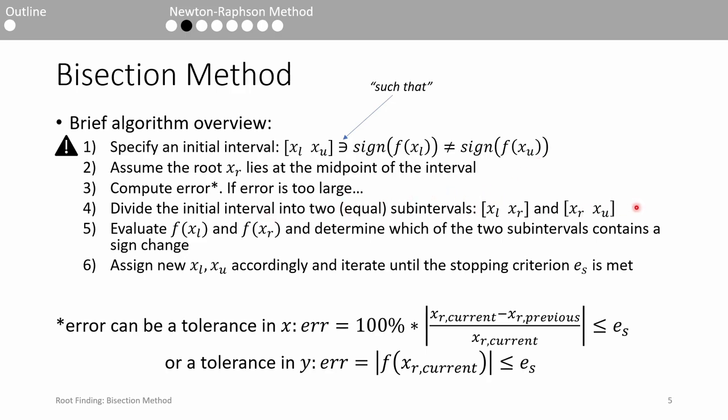and the algorithm looks for the subinterval which contains the sign change. Within this subinterval, you reassign x_l and x_u accordingly, and you iterate until you converge on the root according to the stopping criterion of your choice.